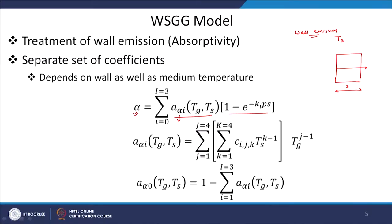The absorptivity as well as emissivity data is fitted from experiments or through line-by-line calculations. The weights for absorptivity are fitted versus both T_g and T_s using a double polynomial correlation with coefficients C_ijk, where i is the gray gas index, j is the gas temperature index, and k is the surface temperature index. Using these coefficients, we can calculate the absorptivity and emissivity of the gas and solve any radiation problem.